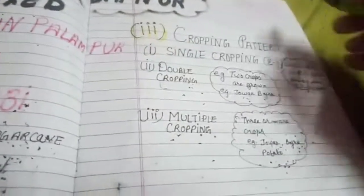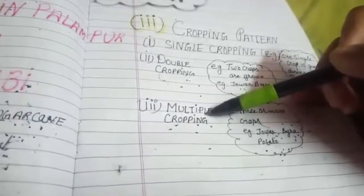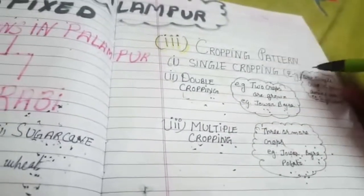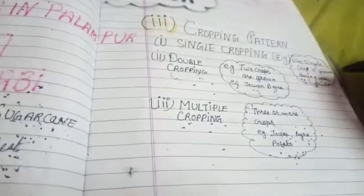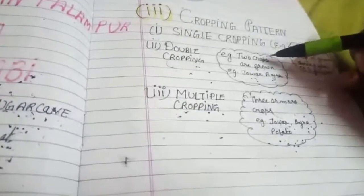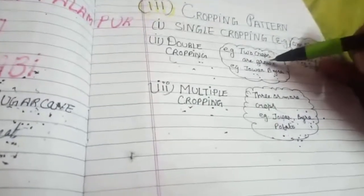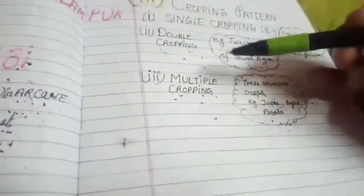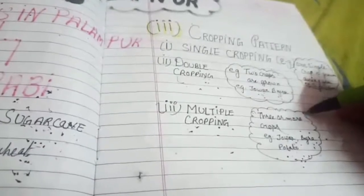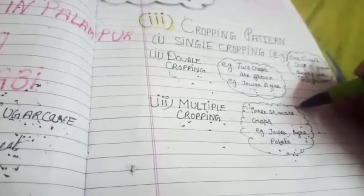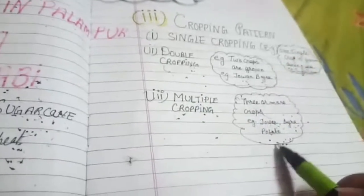The third point is cropping pattern: single cropping, double cropping, and multiple cropping. In single cropping, one crop is grown during the year on a given piece of land, such as sugarcane. In double cropping, two crops are grown during the year on a given piece of land, such as Jowar and Bajra. In multiple cropping, three or more crops are grown during a year on a given piece of land, for example Jowar, Bajra, and a third crop such as potato.